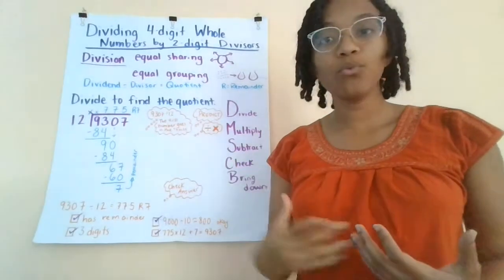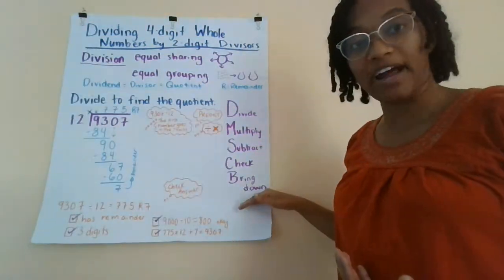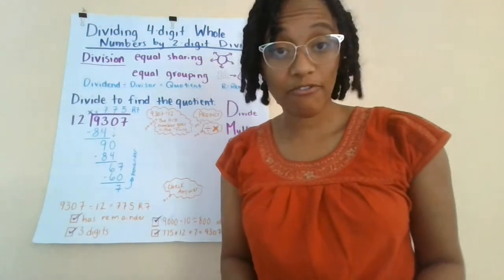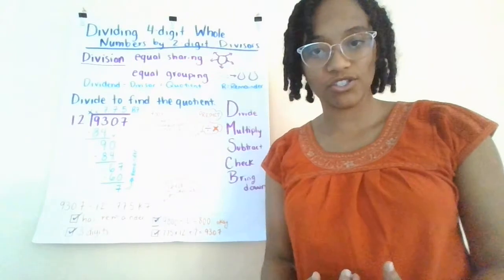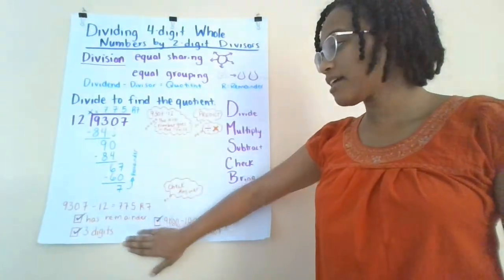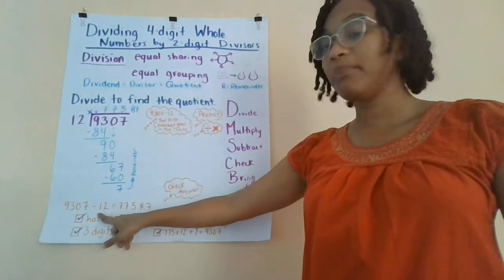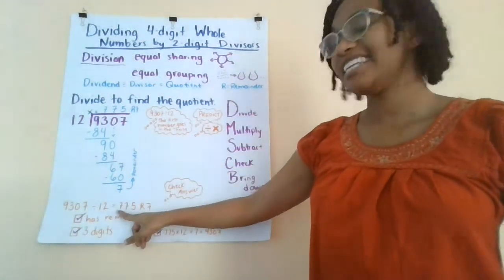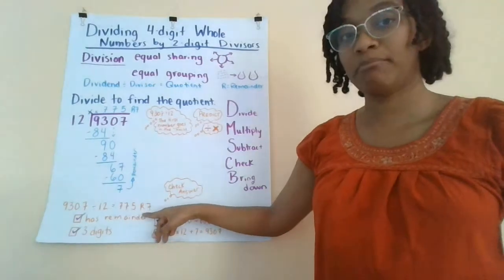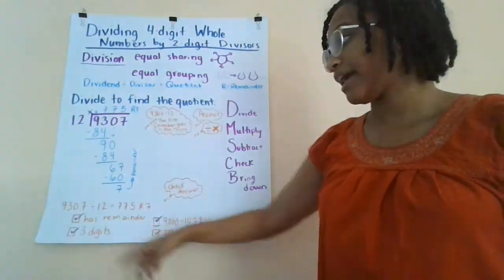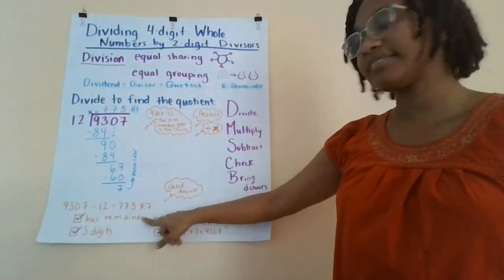So now we have made a prediction, we've gone through the whole dividing process, and the only thing left for us to do is check our answer. So I've made a couple of checks here to see if 9,307 divided by 12 is really 775 remainder 7.